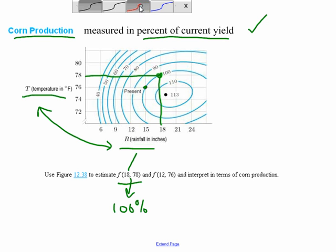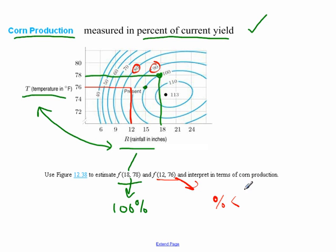Well, that's 100%, which means that at those values of rainfall and temperature, I would yield the same amount as I currently do. Well, what about the next point, 12 comma 76? So if I go up to 12 and then over from 76, I'm falling in between the 80 and the 90. So this means that my percent yield is somewhere between 90% and 80% of what it currently is. So which one of these points would you prefer as a farmer? Well, I'm no farmer, but I would say I would prefer this one because it's producing more corn.